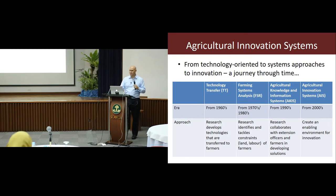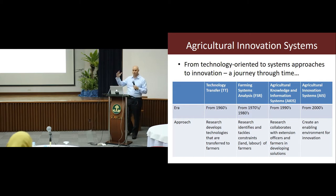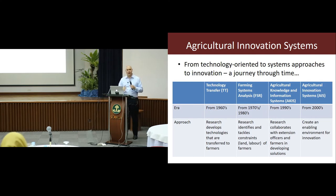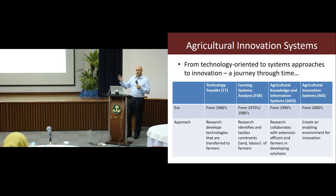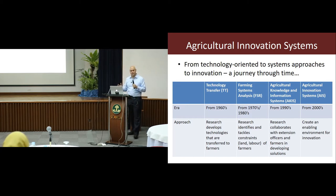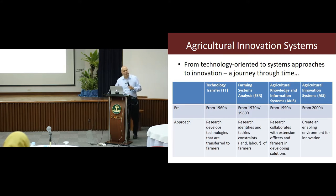We went over this slide this morning. It basically shows how from the 1960s we started with the technology transfer approach — the famous Green Revolution and so on — then moved into a farming systems analysis and FSR approach, then in the 90s to agricultural knowledge and information systems, and finally, in this century, the agricultural innovation system.